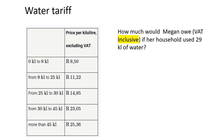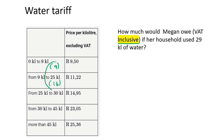Here's our next example. How much would Megan owe, VAT inclusive, if her household uses 29 kilolitres? We start at the top: 9 kilolitres in the first category, 16 in the second. That's already 25, so in the third category we only use 4, because 25 plus 4 equals 29. We're not using all of the 25-to-30 range, just 4 kilolitres.